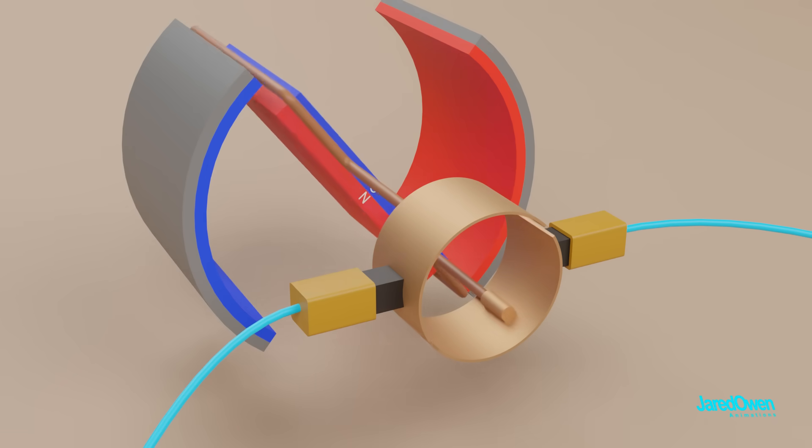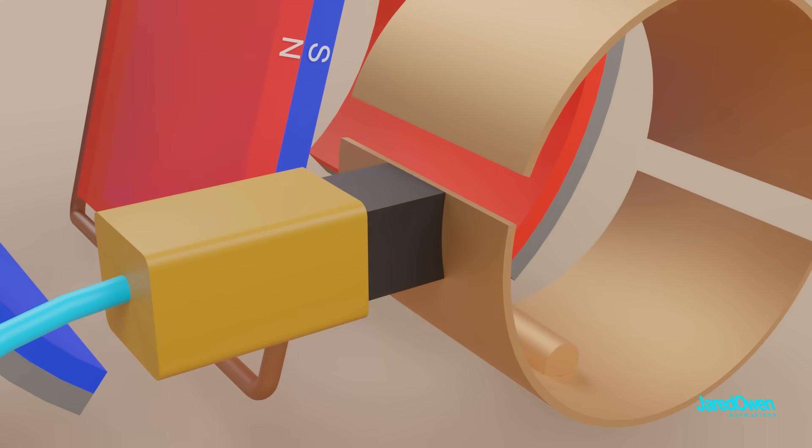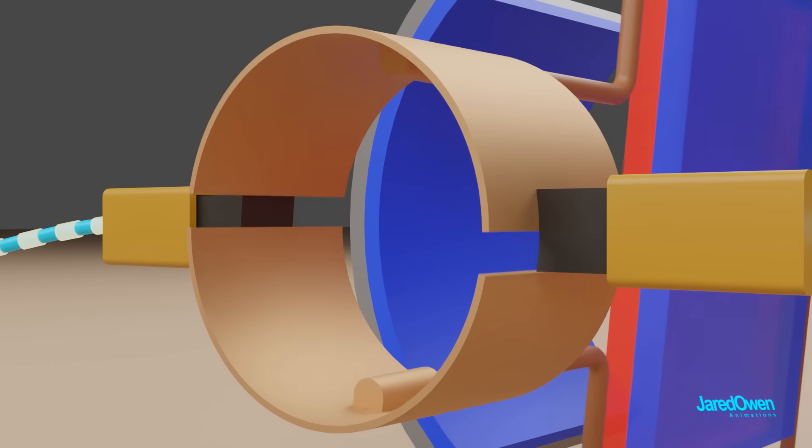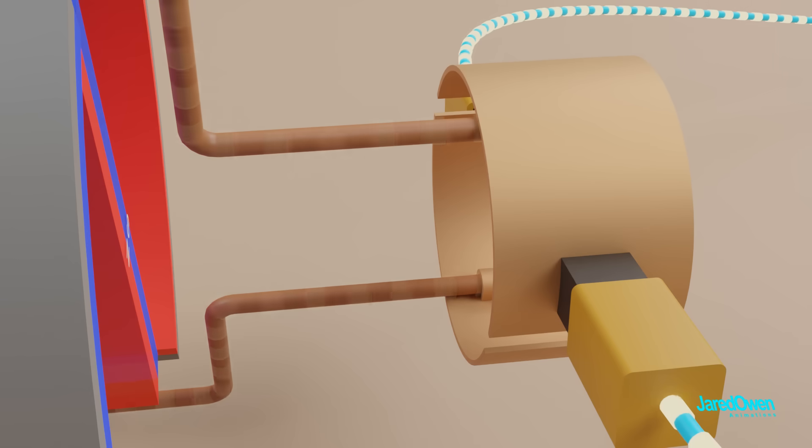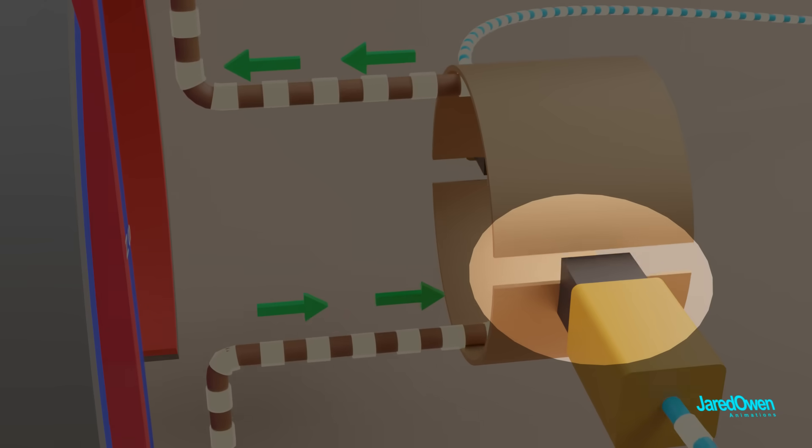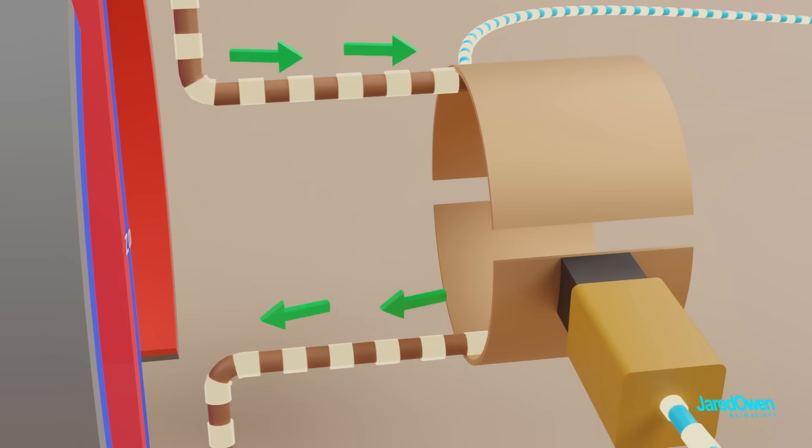As we come around this time, the brushes will switch contact to the other side of the commutator ring. Remember there's two brushes so this is happening on both sides. Before the switch, the current in the armature is flowing this way. After the brushes switch sides, current will flow the other way.